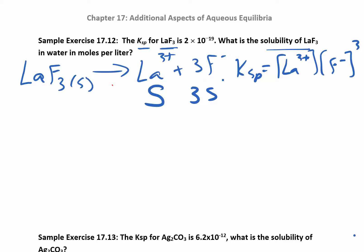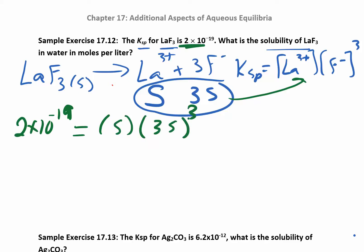Now what I'm going to do is I'm going to take this s and this 3s and I'm going to plug that into my KSP expression and I'm going to solve for s. So s is the molar solubility, and I got this s and this 3s just looking at the stoichiometry of this reaction. Then I'm going to solve for s and that's my solubility. So I can just plug those in. My KSP is 2 times 10 to the negative 19, that's what they gave us, 2 times 10 to the negative 19, which is really really small.